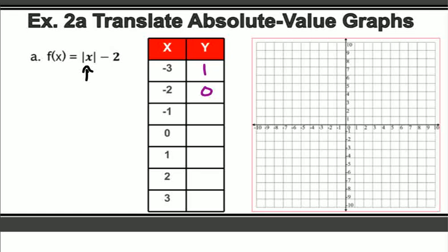The absolute value of 0 is 0; 0 minus 2 is negative 2. The absolute value of 1 is 1; 1 minus 2 is negative 1. The absolute value of 2 is 2; 2 minus 2 is 0. The absolute value of 3 is 3; 3 minus 2 is 1.